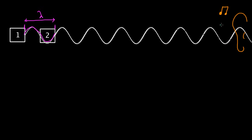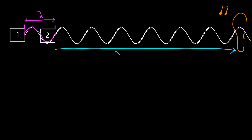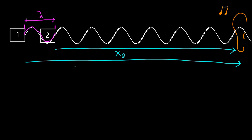The moral of this story is that even if you have speakers that are in phase, you can get constructive or destructive interference depending on the difference in length that these two waves travel. Wave two is traveling distance x₂ to get to my ear, and wave one is traveling distance x₁. If I take the difference between these two, I find the path length difference — delta x. We saw that if delta x equals lambda it was constructive, and if it equaled half lambda it was destructive.